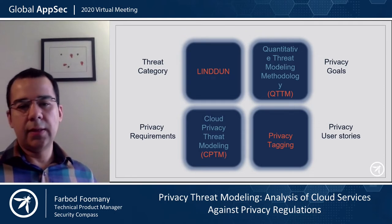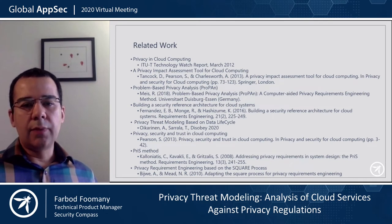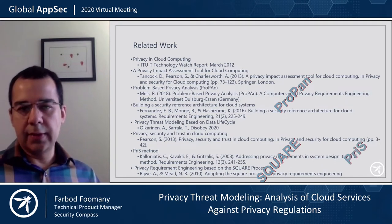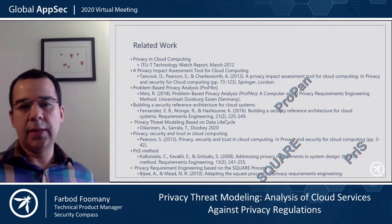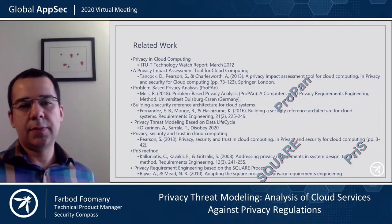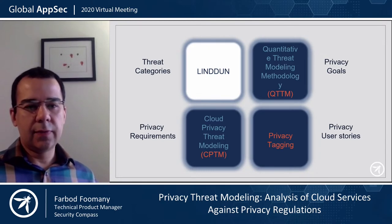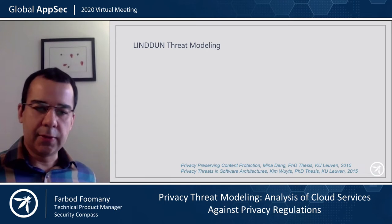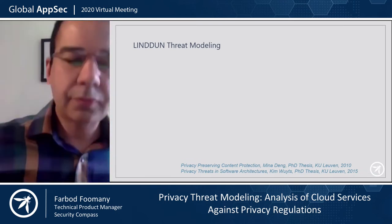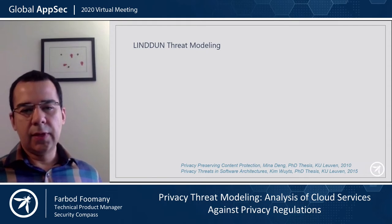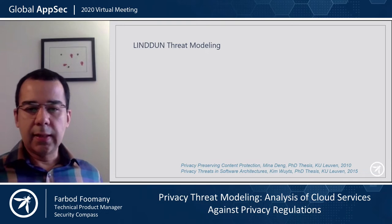QTTM works on some privacy goals. I also introduced the work that we had done previously on privacy tagging. During this research, I looked at all of the other methods and only chose these four to tell a story, but there are also other methods you can check, including PROPAN and SQUARE. All of those other methods have similar and common elements with these ones. I start from LINDDUN, which is the result of research at KU Leuven University, and you can read more about this in Mina Deng and Kim Wuyts's PhD theses from 2010 and 2015.